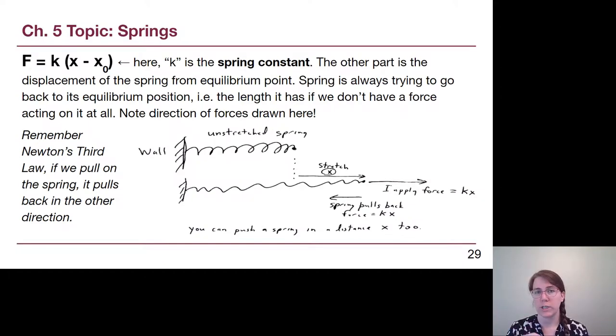The k value in that equation is called the spring constant, and it's in units of newtons per meter. The other part—whether it's x minus x₀, delta x, delta L, or just x—is trying to describe how far the spring is from its equilibrium point. If you have a spring of a certain length, pressing it together creates a force trying to push it back, and pulling it apart creates a force trying to push it back. The key thing is that the spring is always trying to get back to where it started.